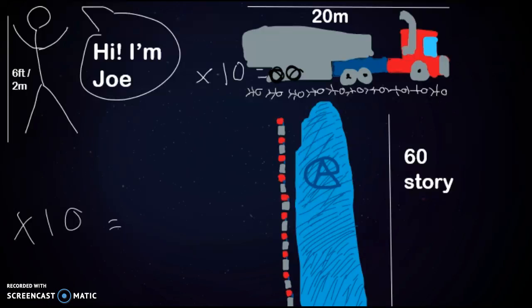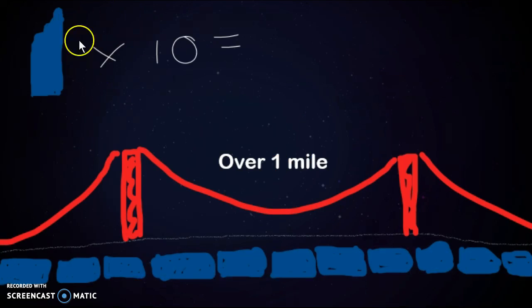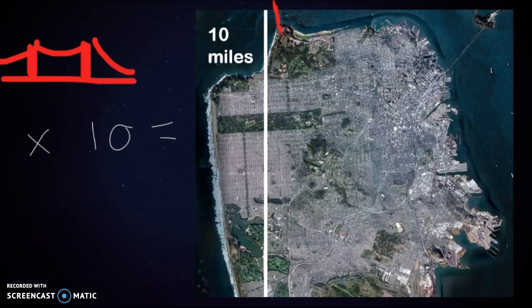If you multiply that by 10, we get roughly the size of the Golden Gate Bridge, which is over a mile, but it's still something we can comprehend. And if we multiply that by 10, we get roughly the size of San Francisco, which is roughly 10 miles.